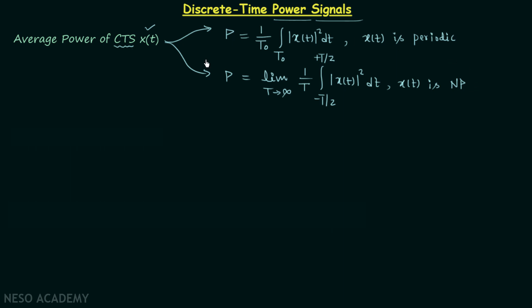We have seen all these things in the continuous time signals chapter, solved many examples using the formulas, and have all the concepts clear related to continuous time power signals. This is just a revision. Using these two formulas, we will obtain the two formulas for the calculation of average power of a discrete time signal x(n). We will simply modify the two formulas to get the formulas for x(n).